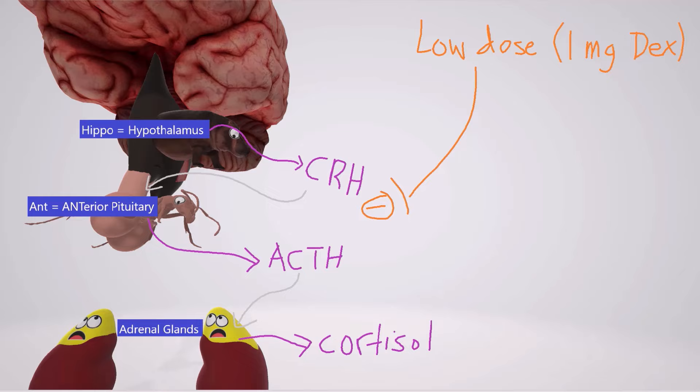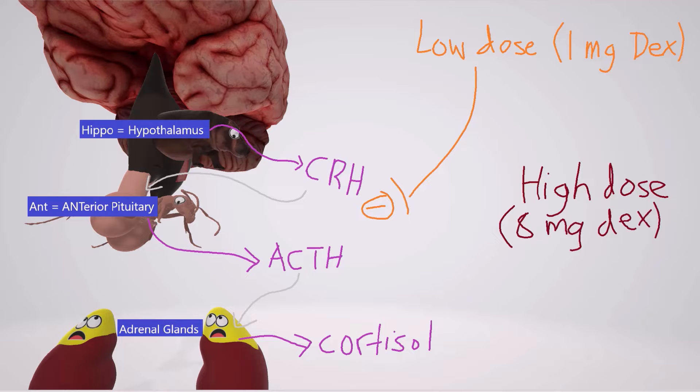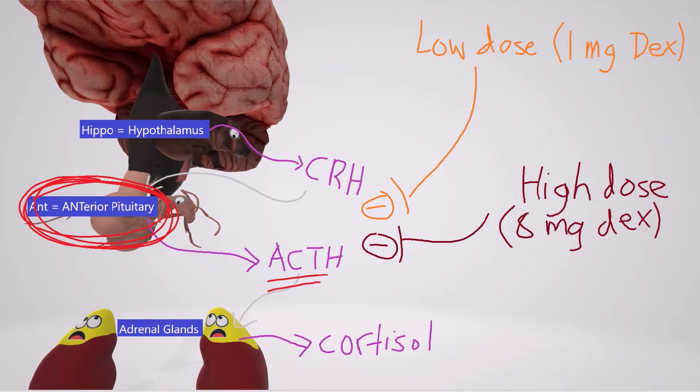So let's say the person has been diagnosed with Cushing syndrome — where does it come from? That's why we give the high dose: 8 mg of dexamethasone. This test determines where the excess cortisol is coming from. Dexamethasone suppresses CRH and ACTH release from the hypothalamus and anterior pituitary. In Cushing's disease, the problem is in the anterior pituitary — for example, a pituitary adenoma — which pumps out lots of ACTH. The high dose of dexamethasone is enough to suppress that ACTH, so ACTH goes down and cortisol goes down.